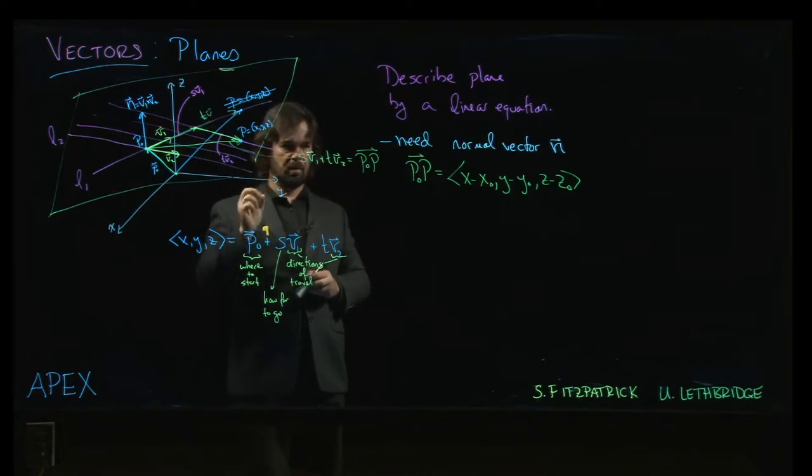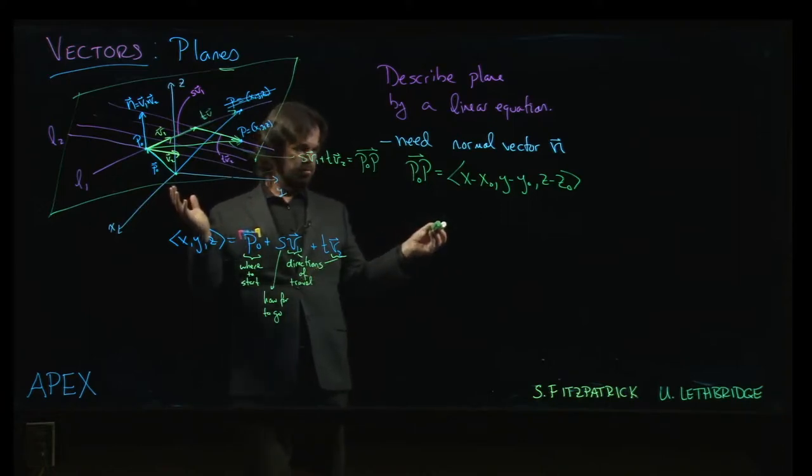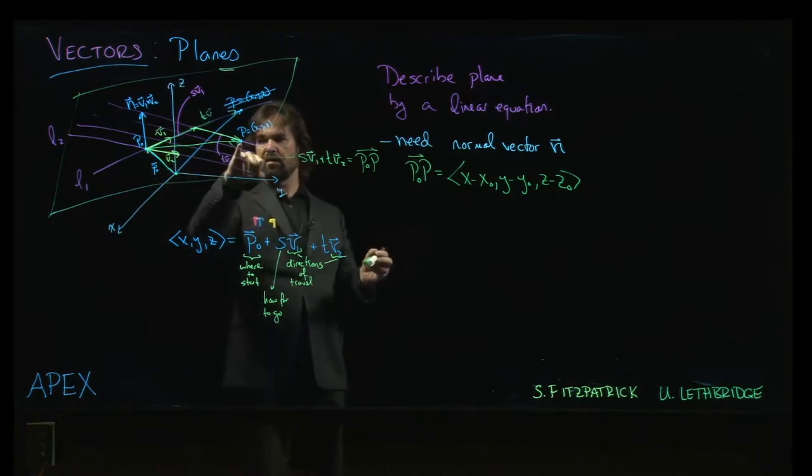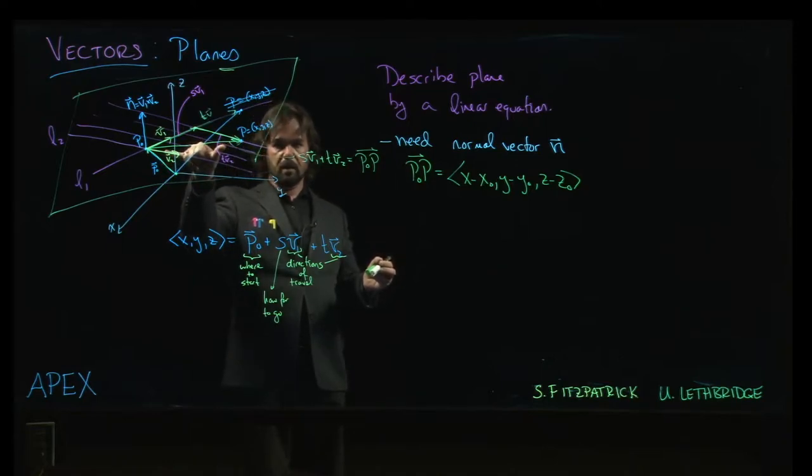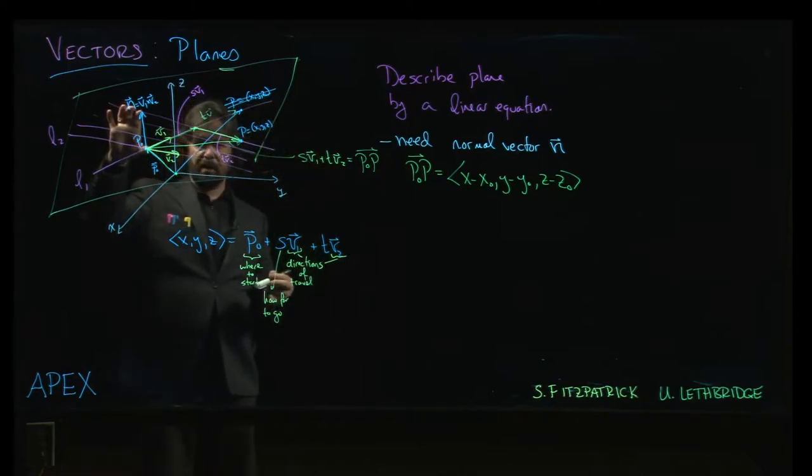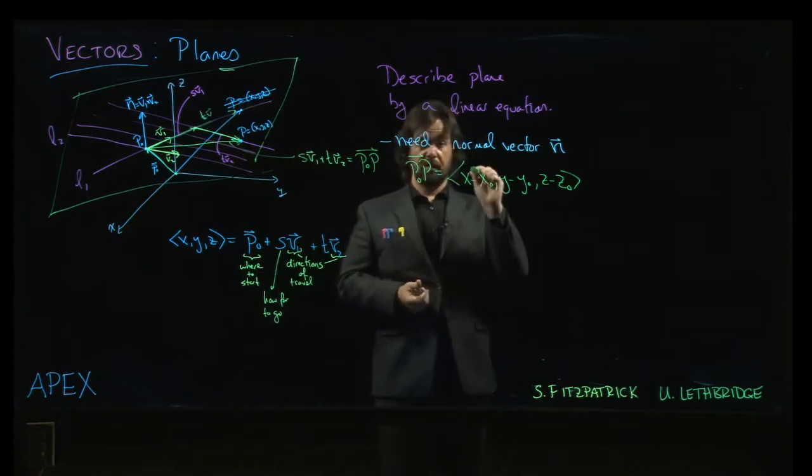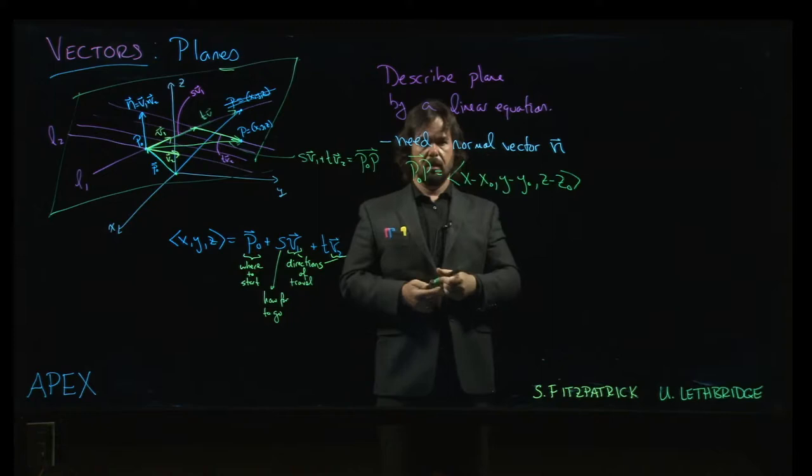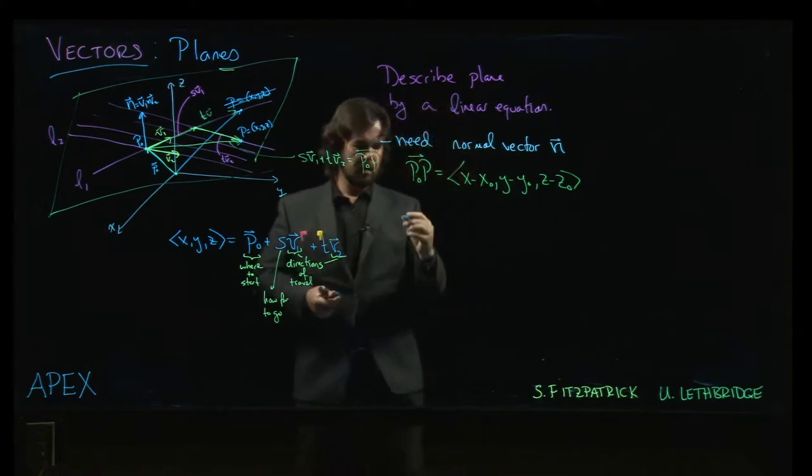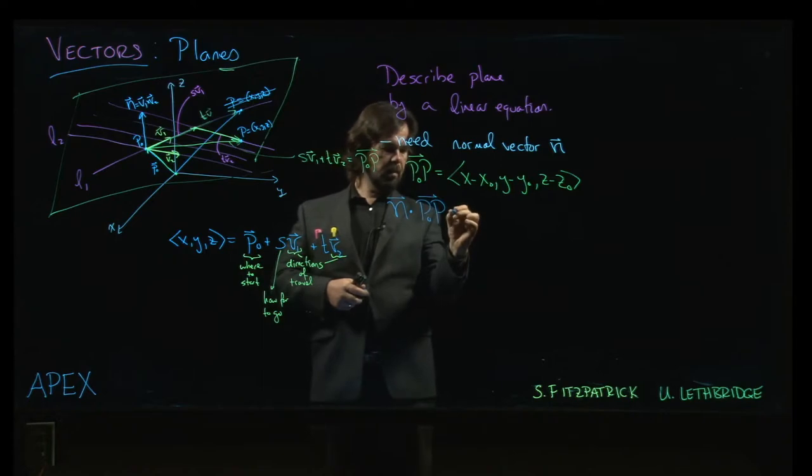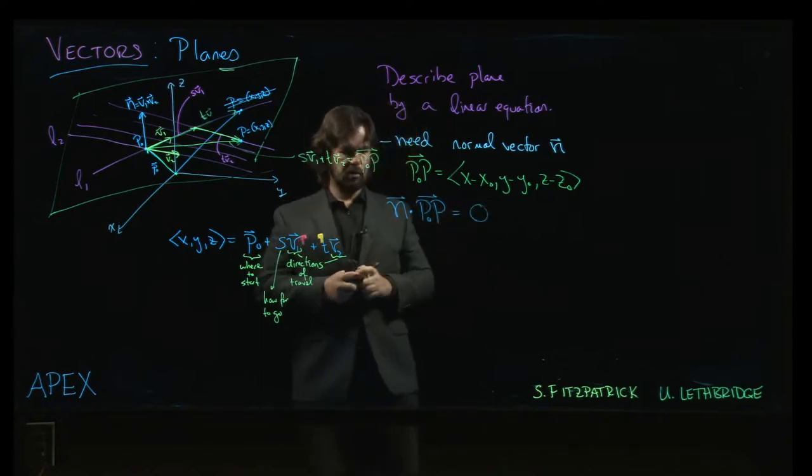And, now, we think about this vector here, sv1 plus tv2. So, what is this vector? It's the vector from p0 to p. So, the other thing that we can do is say, well, that vector from p0 to p, if we do the usual head minus tail rule, well, it's going to look like this. It's just going to be x minus x0, y minus y0, z minus z0.